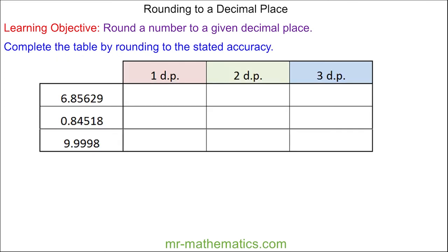Let's try one more question. Do you want to try and complete the table by rounding to the stated accuracy? You can pause the video and resume it when you're ready. To one decimal place this becomes 6.9. To two decimal places the six rounds up the five to a six, so it becomes 6.86. To three decimal places the two does not round up the six, so it becomes 6.856.